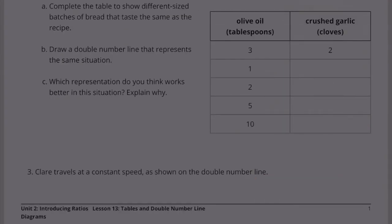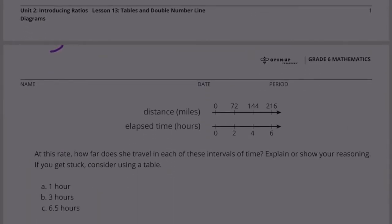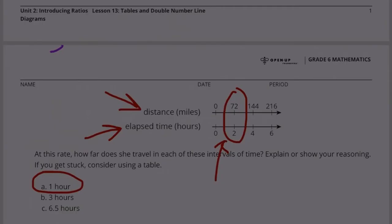Number 3: Claire travels at a constant speed as shown on the double number line. At this rate, how far does she travel in each of these intervals of time? Explain or show your reasoning. If you get stuck, consider using a table. Here's the distance in miles and here is the elapsed time in hours. Part A: How far does she travel in one hour? One hour is missing, but they provide us with two hours. If she goes 72 miles in two hours, all we have to do is cut that in half. 72 divided by 2 equals 36. 36 miles in one hour.